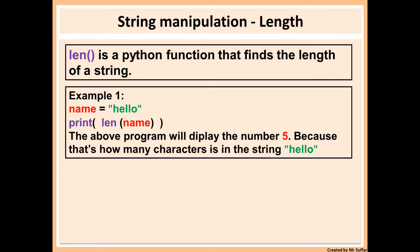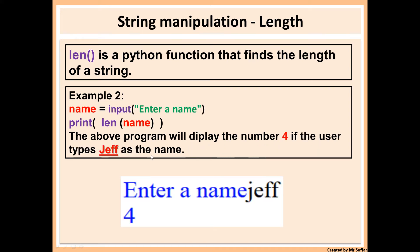Next we have length check. Length is when you're trying to find the length of a string. In this case we use the len function in Python. So name equals 'hello' — this variable is storing the string 'hello.' Then on the second line I printed the length of name, which will print five because there are five characters inside name. That's the purpose of the length function — to find the length of a specific string. Here we have another example where I asked for a name, then printed the length of name. This will print the length of whatever the user enters. In the example at the bottom, I entered Jeff and it displayed the number four because Jeff has four letters.